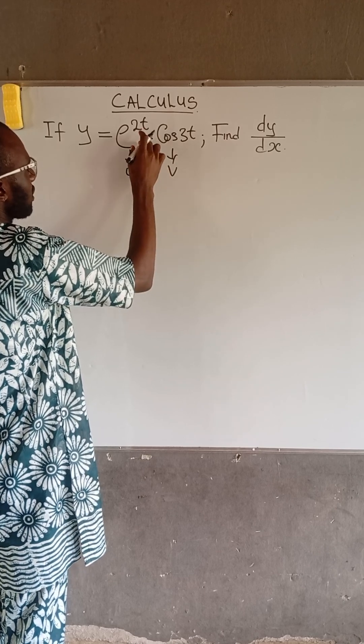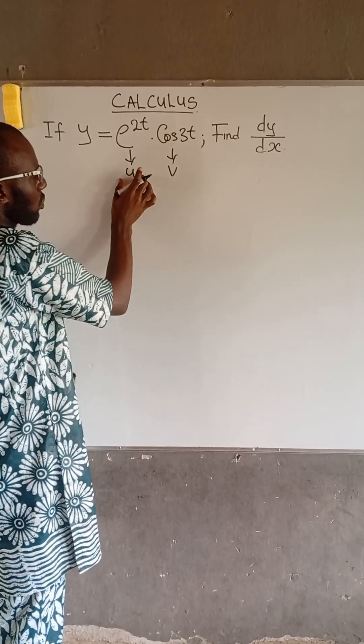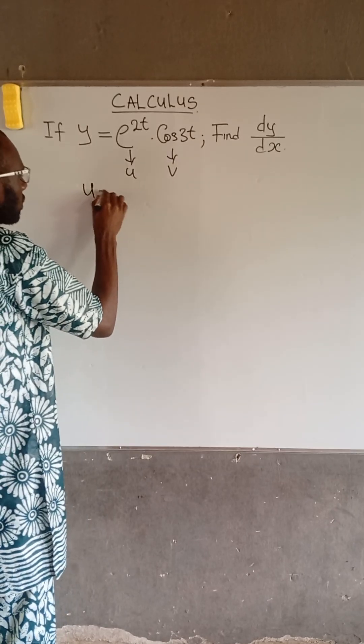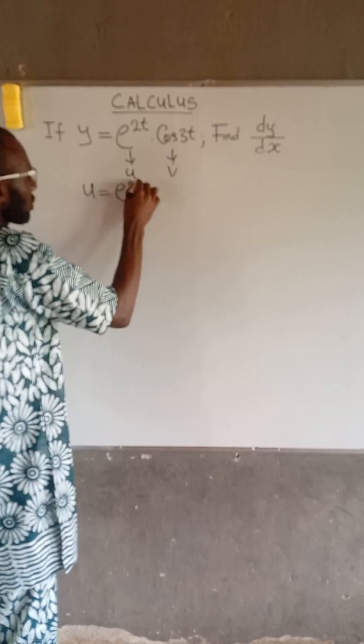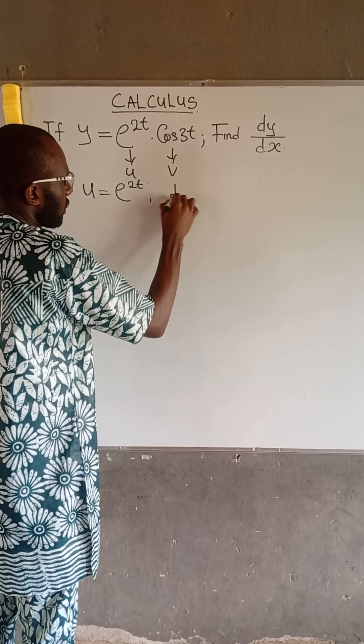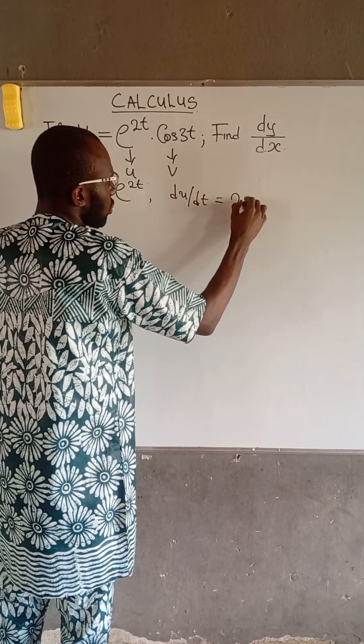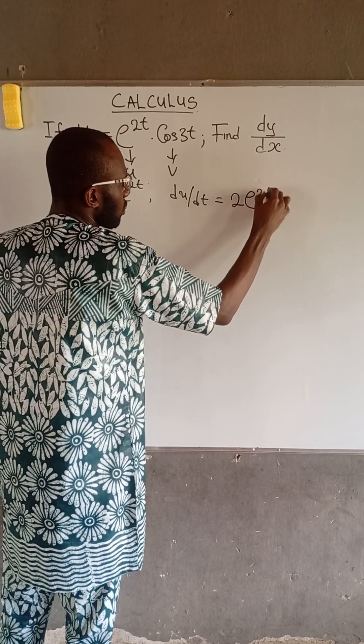Let e to the power of 2t be equal to u and cos 3t be equal to v. Note that u is equal to e to the power of 2t, therefore du over dt will be equal to 2 multiplied by e to the power of 2t.